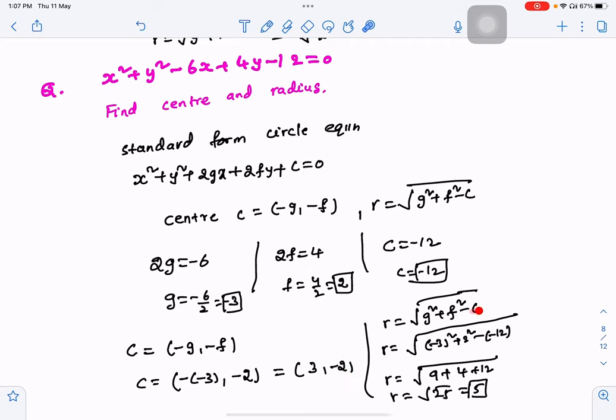Next, is the radius formula. R is g² plus f² minus c. So g is minus 3 and f is 2. Minus 3 and plus 2, minus minus equals plus.